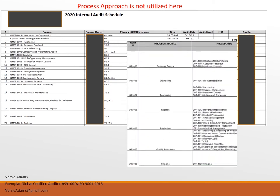This second audit schedule is an example of one that does not entirely comply with the process-based approach to audits. They have identified what they call a process in the second column, but it's not the high-level processes we want to see, as compared to the previous slide. The standard in section 4.4.1 states that the organization shall determine the processes needed for the quality management system and their application throughout the organization. When planning your audit schedule, make sure you're effectively scheduling audits based on processes at predetermined intervals throughout the year.